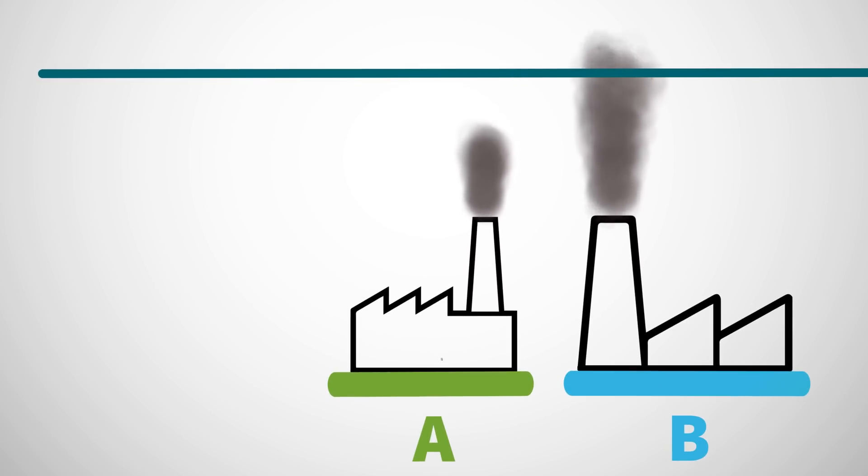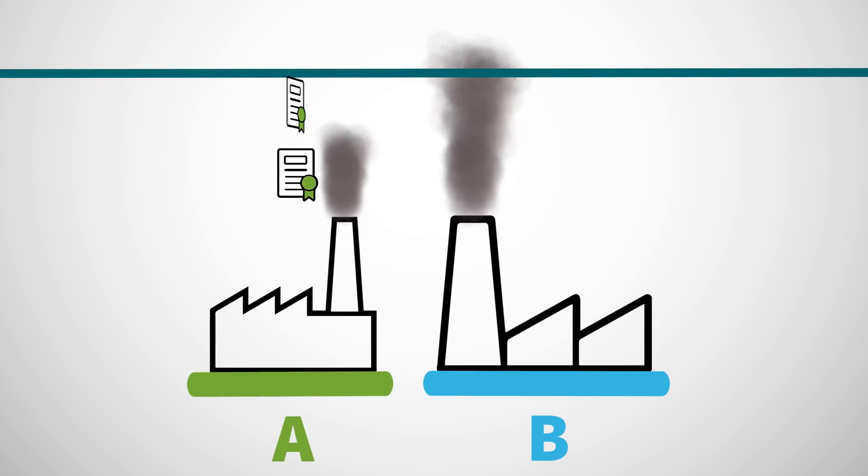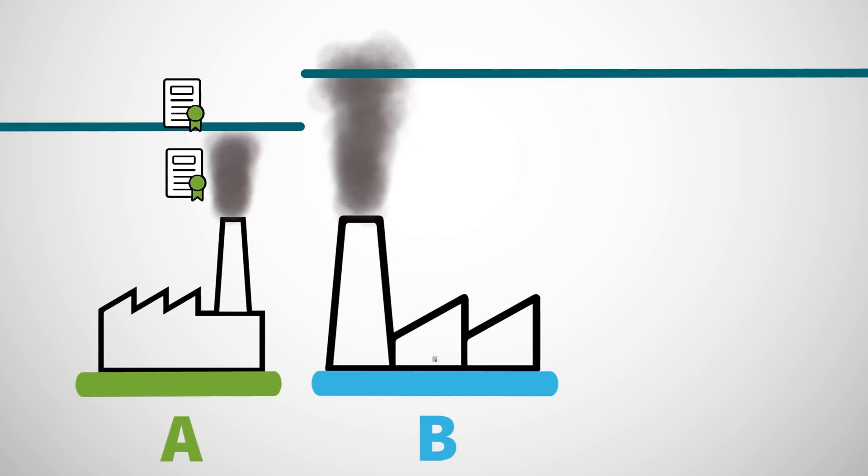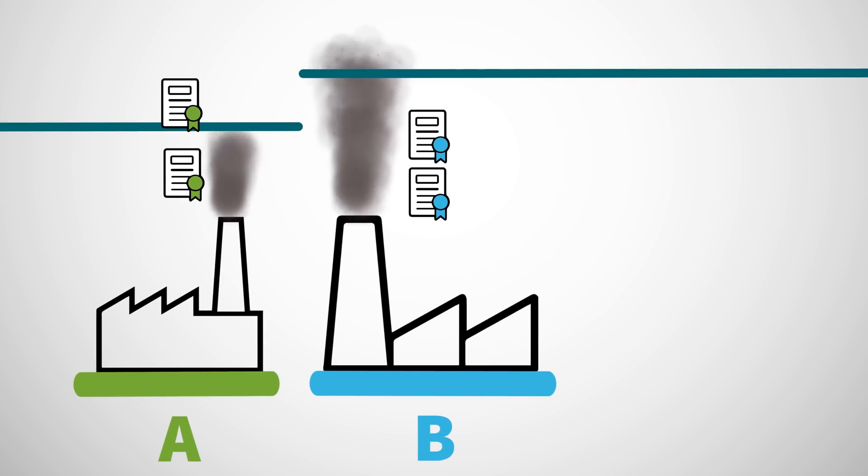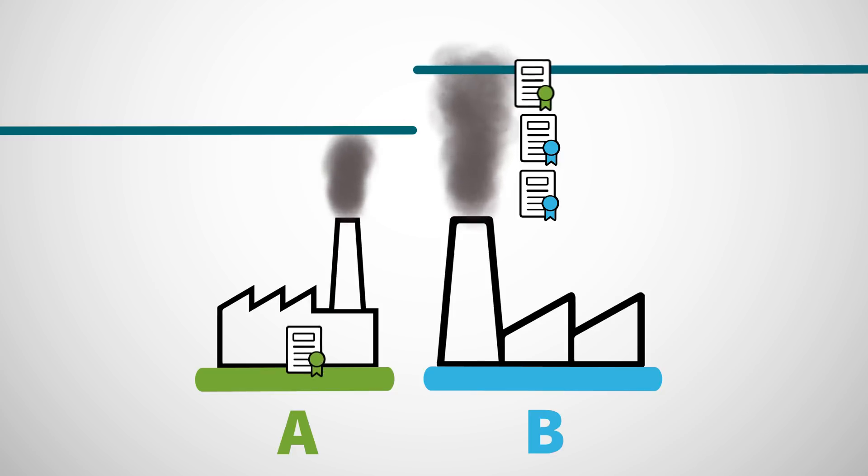Company A identified many low-cost opportunities to reduce emissions. As a result, it has more permits than it needs. Company B, on the other hand, mostly has expensive options for reducing GHG emissions. As a result, it wants to buy additional permits.